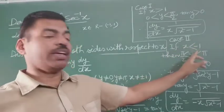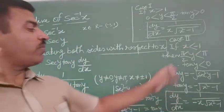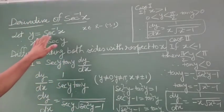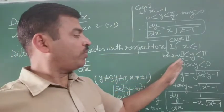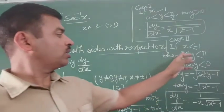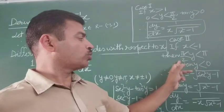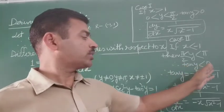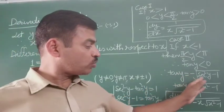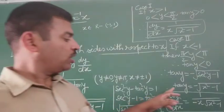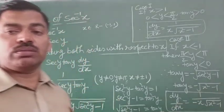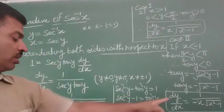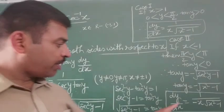Now if x is less than minus 1, then y must belong to pi by 2 to pi, because the value of sec will be negative. We know that in the second quadrant, sec is negative. So 10 y value in the second quadrant is also less than 0, meaning tan y is negative. Therefore tan y equals to minus root (sec square y minus 1), so tan y equals to minus root (x square minus 1). So dy by dx will be negative: at the place of sec y we write x, and at the place of root (sec square y minus 1), we write minus root (x square minus 1).